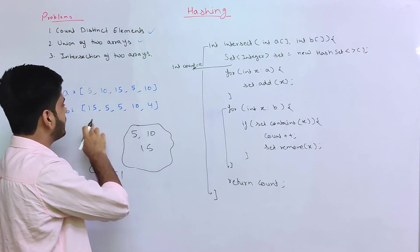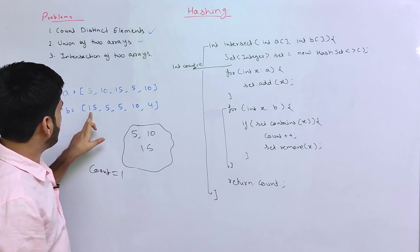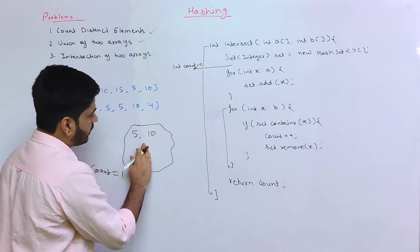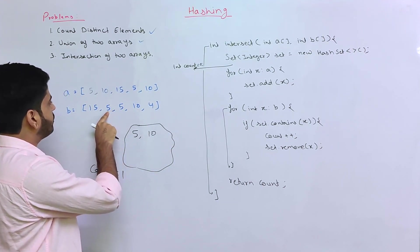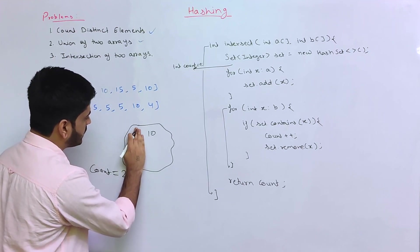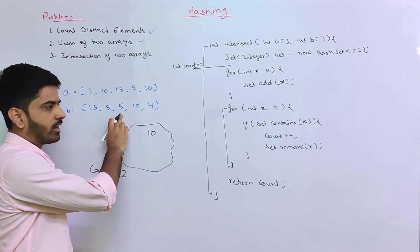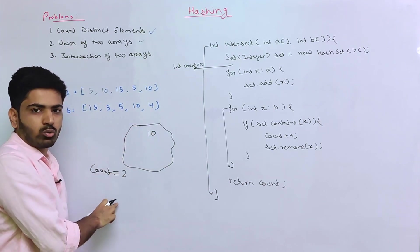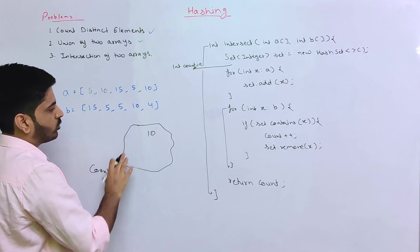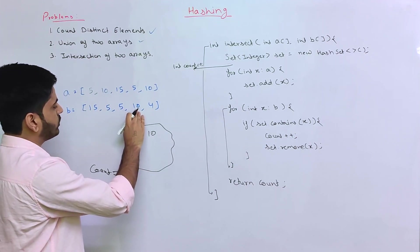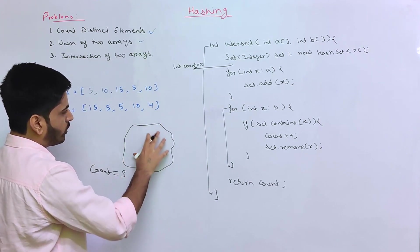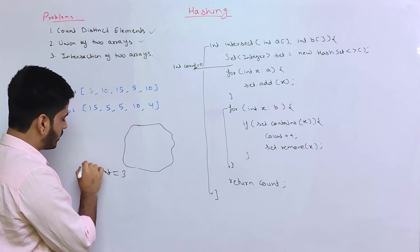After incrementing the count, we also remove this element from the set, because we do not want it to be counted again — we only want unique elements in the intersection. After removing 15, we move to the next element 5. Since 5 is in the set, we increment to 2, then remove 5 from the set. If 5 appears again, it is no longer in the set so the counter does not increment. Then we check 10 — it is present so we increment. Then we check 4 — it is not in the set so counter does not increment. Our answer is 3 and the unique intersection elements are 5, 15, and 10.